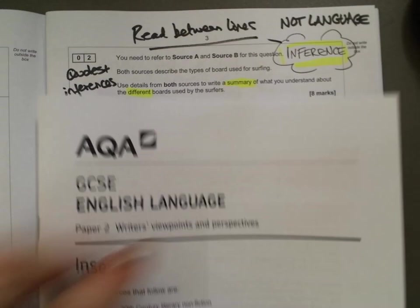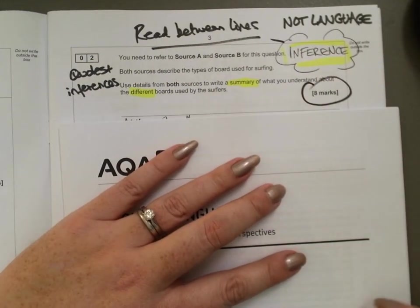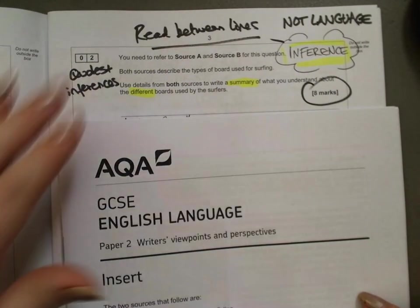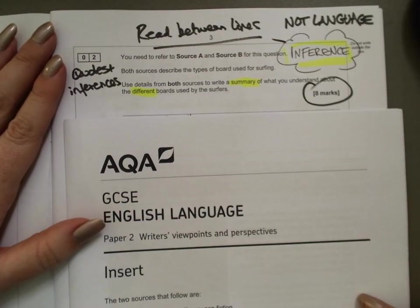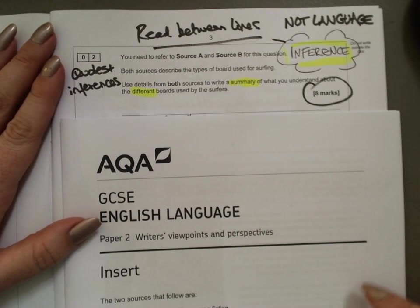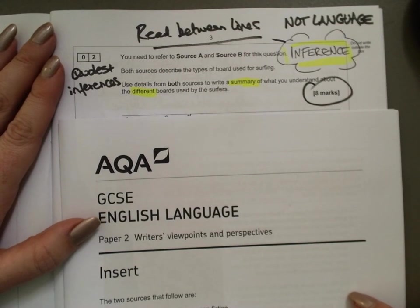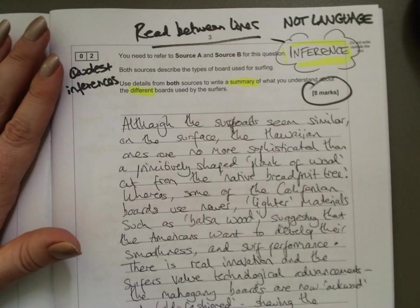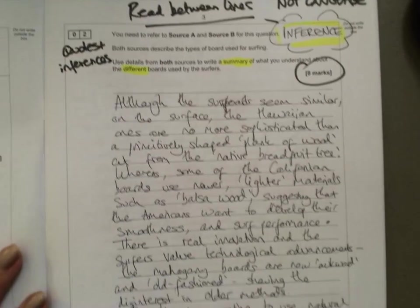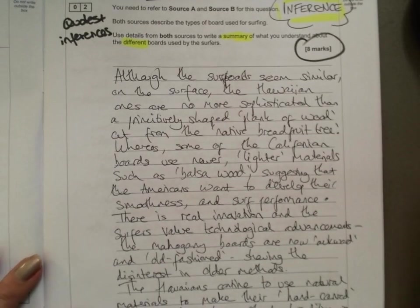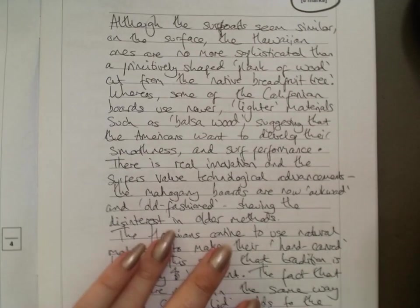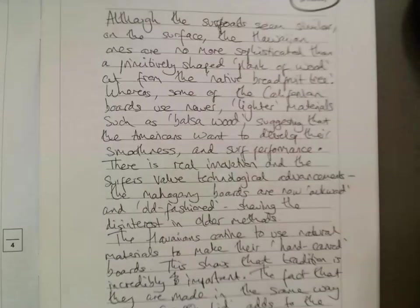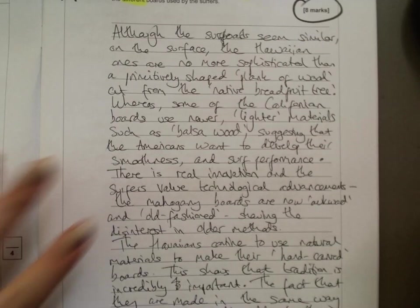This question is only worth eight marks — that's something I would draw your attention to. Sometimes my students end up spending 20 minutes on this because they're looking at both texts and it feels quite hard to do. I had a go at this question earlier and wanted to show you a full mark response. It took me about nine minutes to do. And obviously you'll take a bit longer, but even so, be strict with yourself. If you find that you're doing more than about a side and a half, you need to stop.